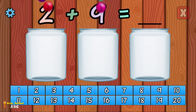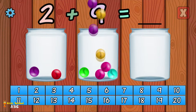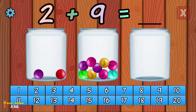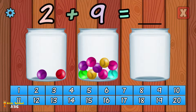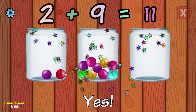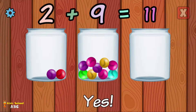What is 2 plus 9? Yes! 2 plus 9 equals 11.